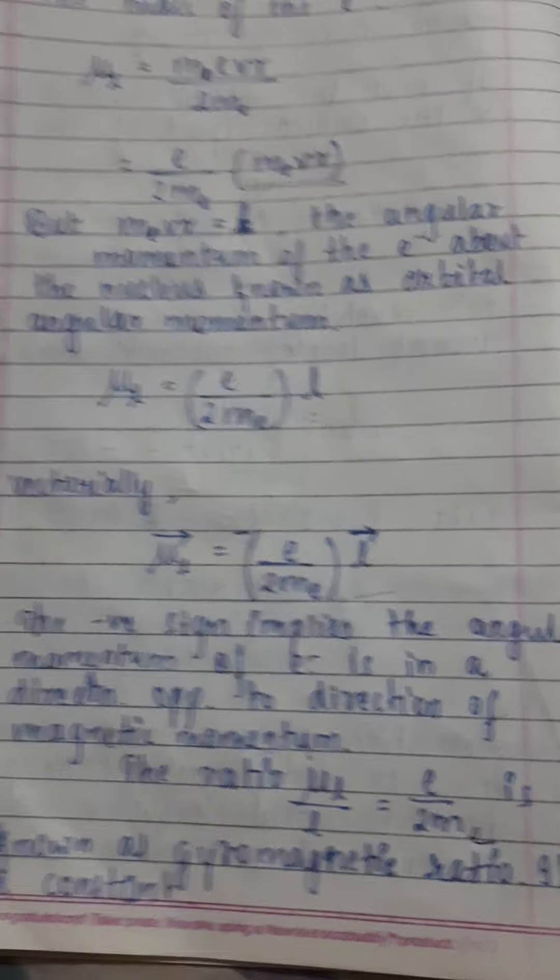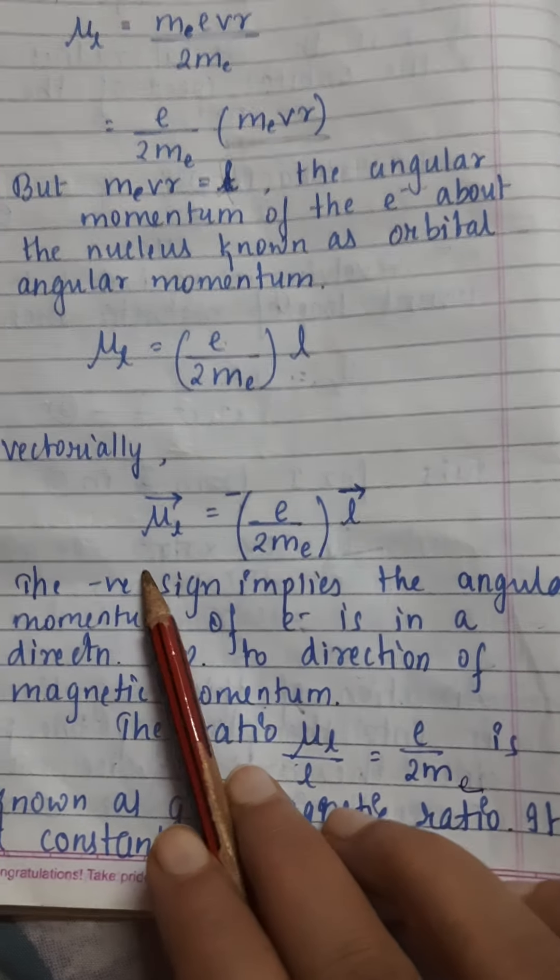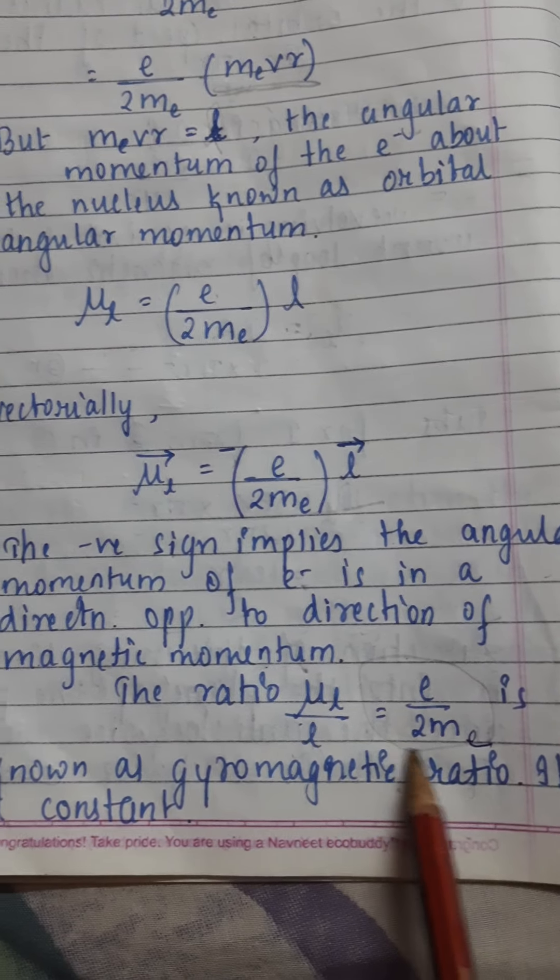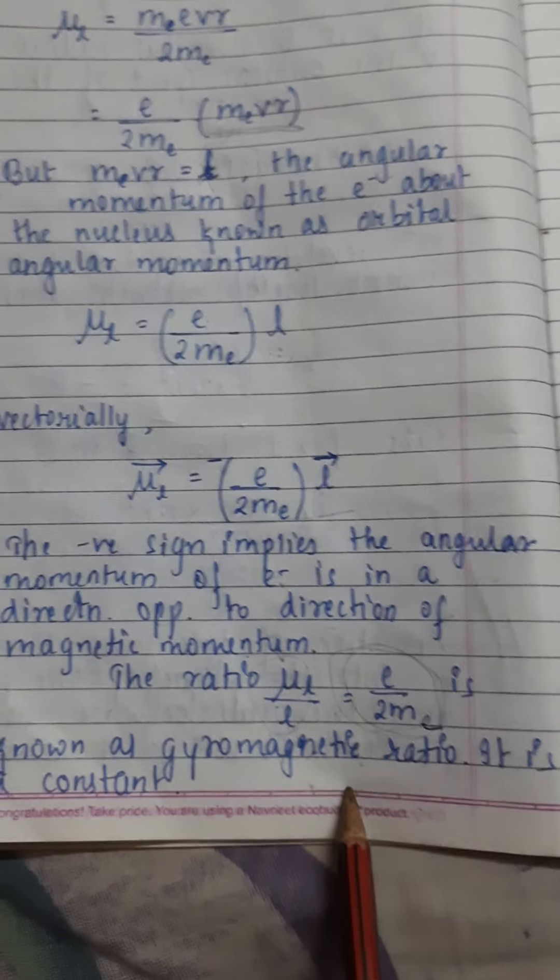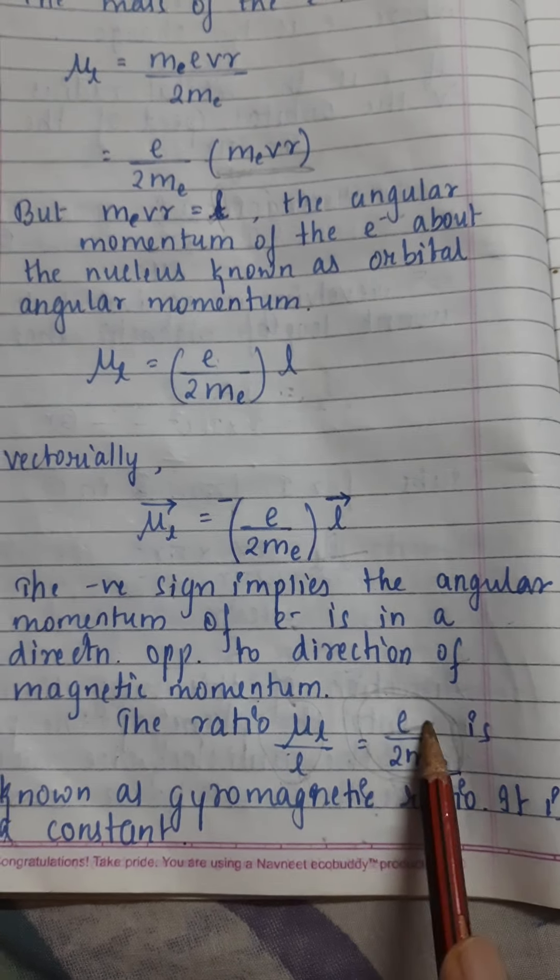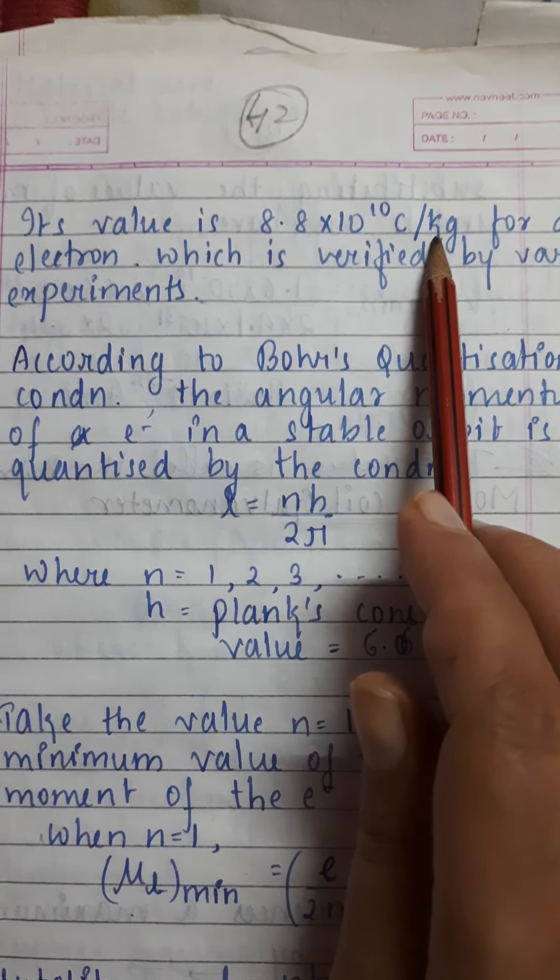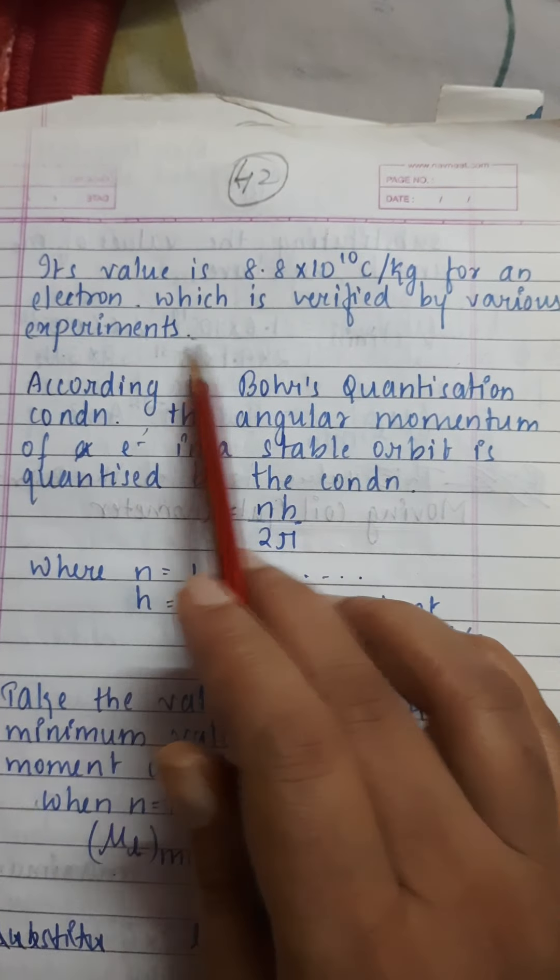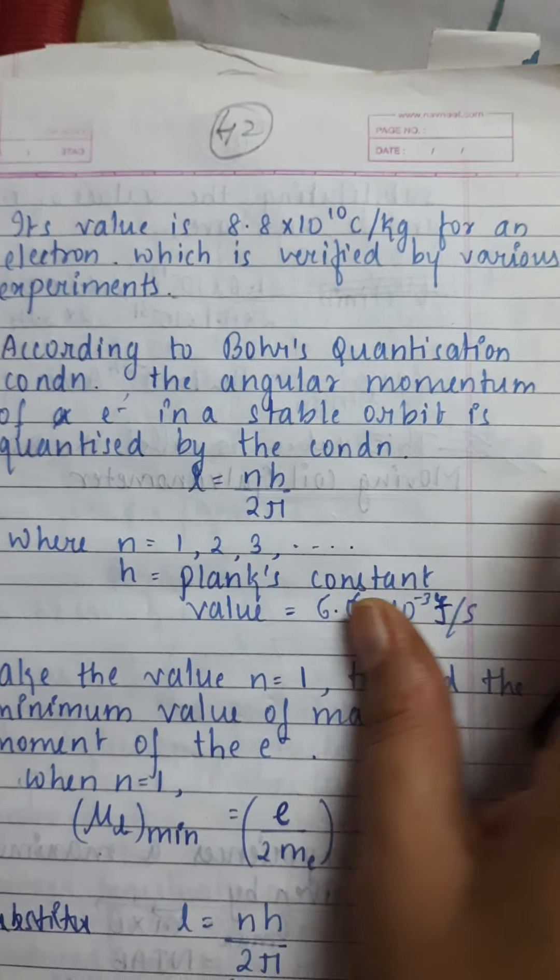The ratio μl by L gives us μl/L equals e/(2me). This constant ratio is called the gyromagnetic ratio. Substituting the mass and charge of electron and solving, we get the value of 8.8×10^10 coulomb per kg for an electron, which is verified by different experiments. This ratio is constant.